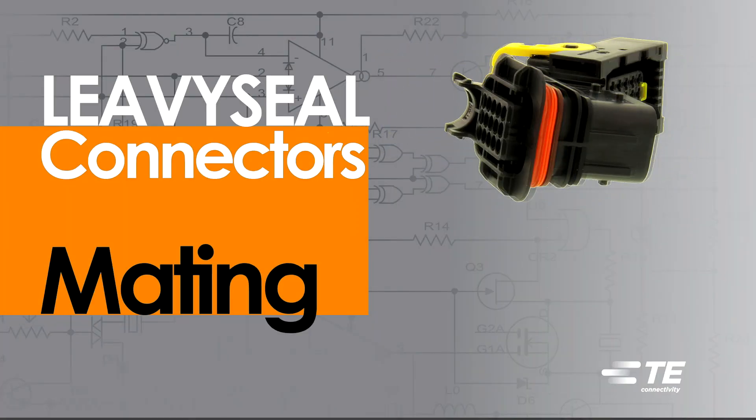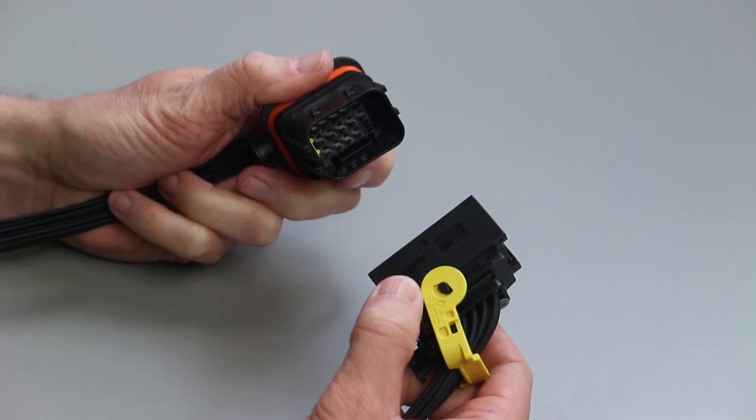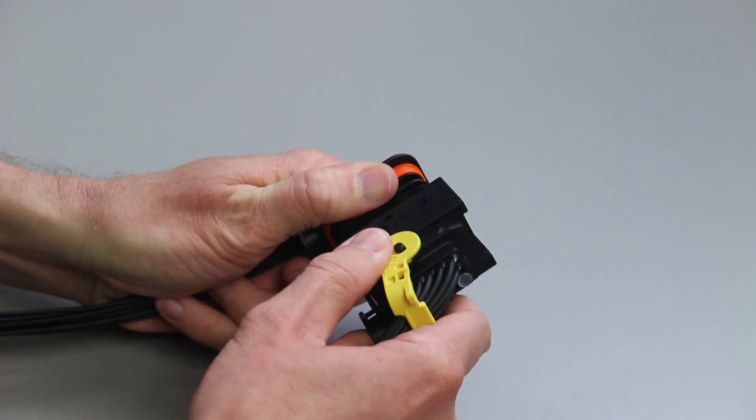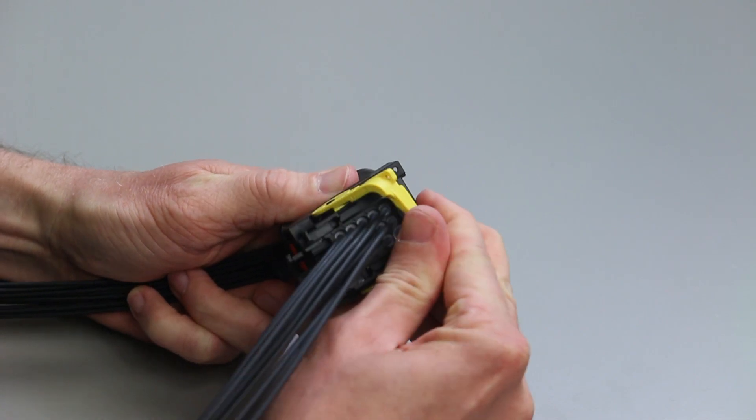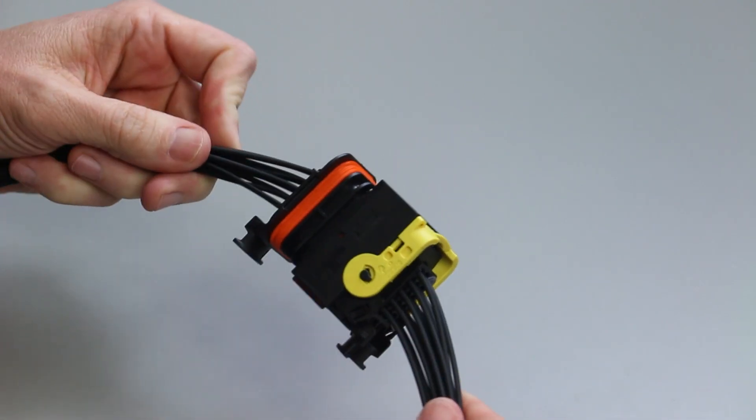Levee Seal Connector Mating. All Levee Seal Connectors are designed to be mated and unmated by hand. Align the receptacle contact housing with the tab housing. Push the two parts together and pull the lever lock on the receptacle contact housing until you hear and feel a click.